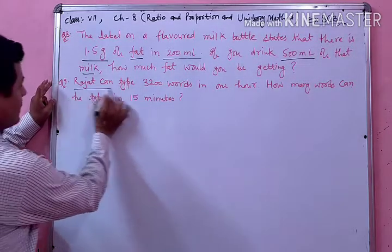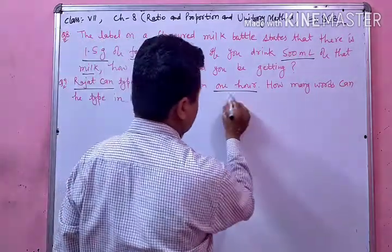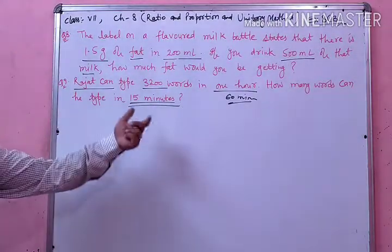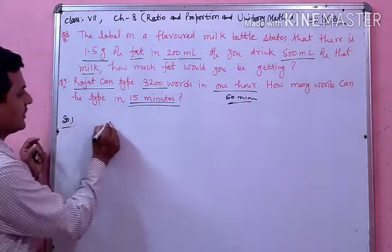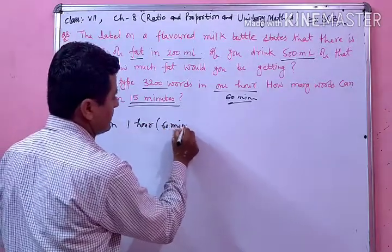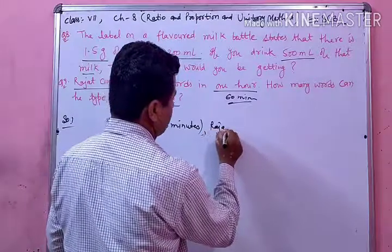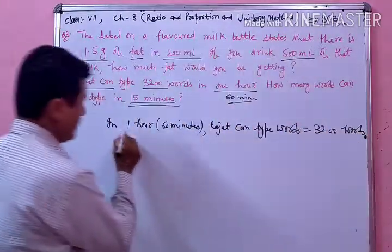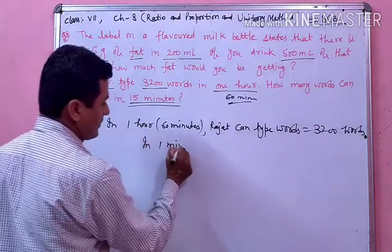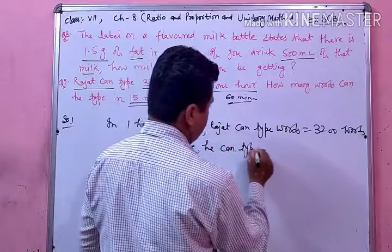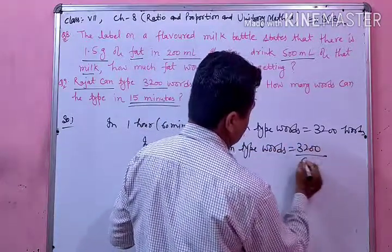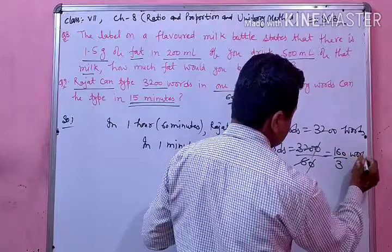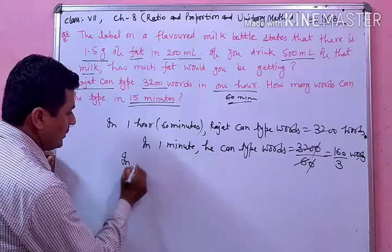Question number 9 की statement है: Rajat can type 3200 words in 1 hour. 1 hour means 60 minutes. How many words can he type in 15 minutes? तो in 60 minutes Rajat can type 3200 words. In 1 minute he can type — 3200 को 60 से divide करेंगे, कट करने पर 160 upon 3 words. इतने words 1 minute में type कर सकता है।